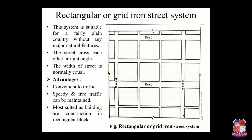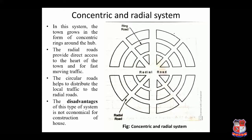The concentric and radial street system consists of circular or ring roads connected to radial roads, forming a network like a spider's web. In this system the town grows in the form of concentric rings around the hub. The radial roads provide direct access to the town.